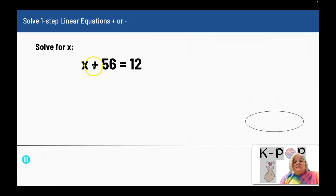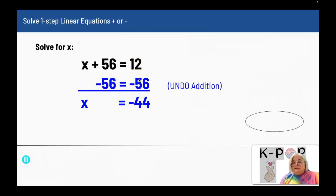So I want to do the inverse operation, which is subtract 56. When I subtract 56 from this side, I have to subtract it from the other side because I need that balance.